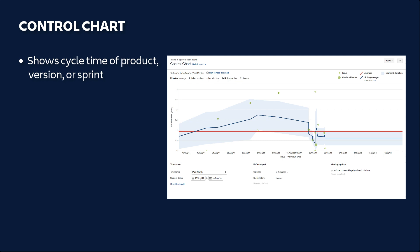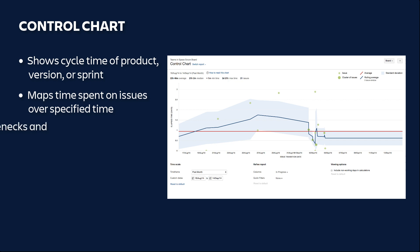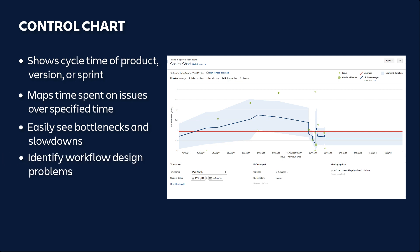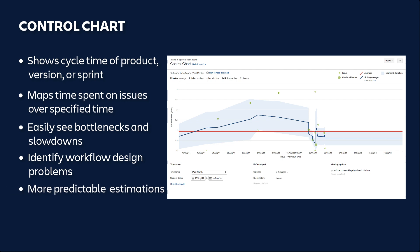It takes the time spent working on each issue and maps it over a specified period of time, so you can easily see where bottlenecks and slowdowns occur in the workflow. The control chart can be used to identify and address workflow design problems and to enable more predictable estimations.